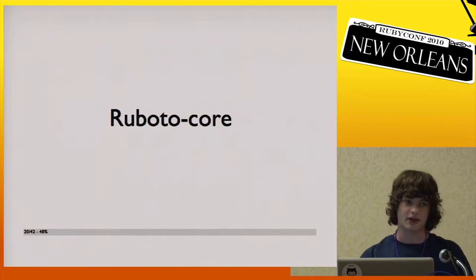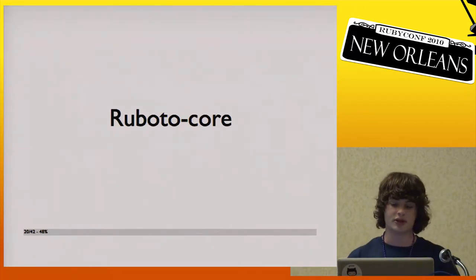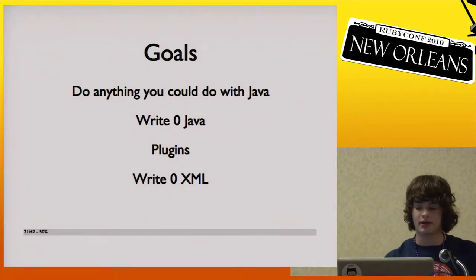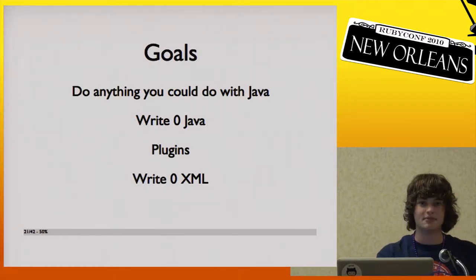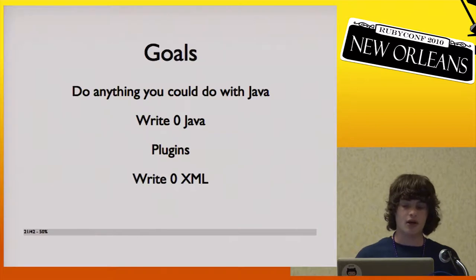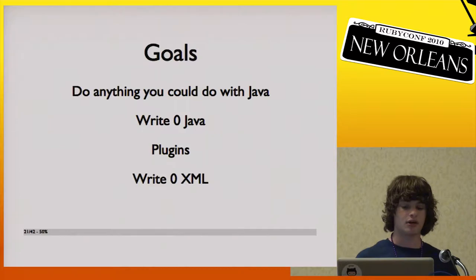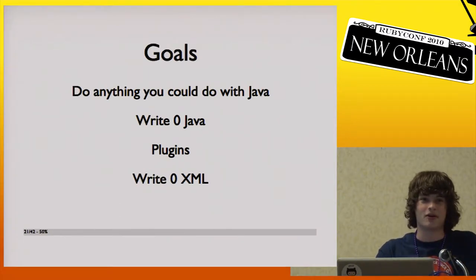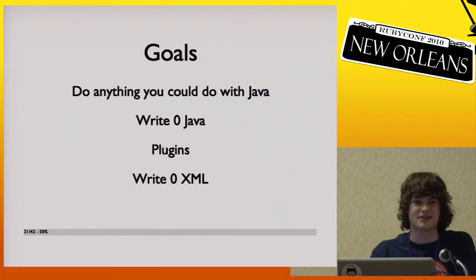That's where I came in — this summer I worked on making Rubato Core, for writing full apps in Ruby. The goals are to expose the entire Java API to your Ruby scripts without actually requiring you to write any Java. Eventually there will be plugins — I see it kind of like Sinatra, with a tight core that exposes functionality and stays out of your way, and people can write plugins on top to make a nicer interface. And I want to make it so you have to write little to no XML, because no one likes XML.